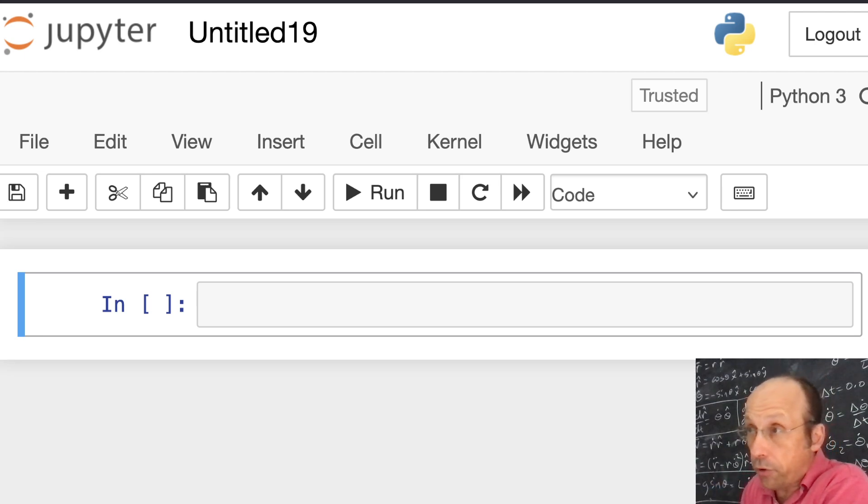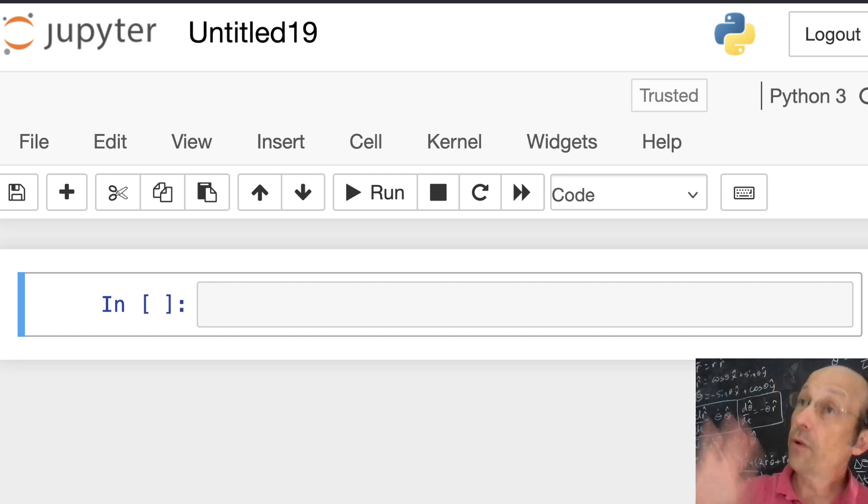Are you ready? This is Jupyter Notebooks. You can install it if you Google Anaconda, you can find it and you can install this. You don't have to. There is Google Colab and Google Colab is an online version of this, so you don't have to install anything. And it runs on your tablet and stuff like that. So it's pretty cool. But I'm using this. So here we are.